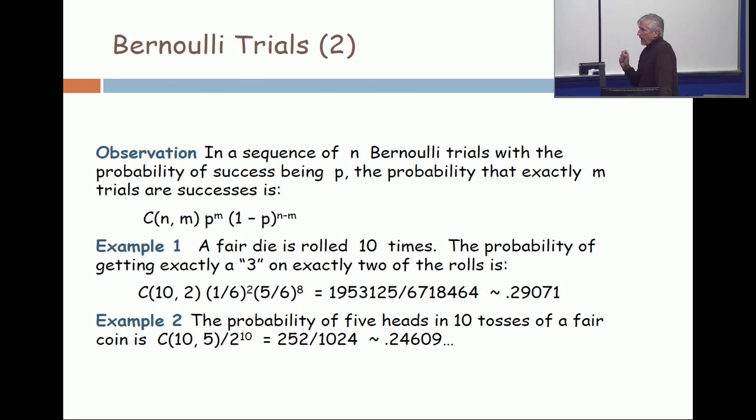Now, notice that in that formula at the top of the slide, if p equals 1 minus p is a half, then it's 1 half to the m times 1 half to the n minus m, and that's just 1 half to the n. So the formula is even simpler when p is 1 half. So if you want to get exactly 5 heads in 10 tosses, the probability is C(10, 5), which is 252,